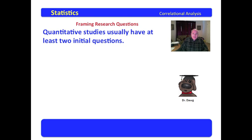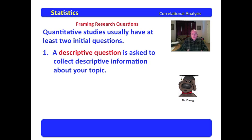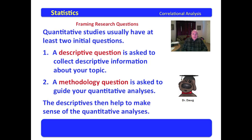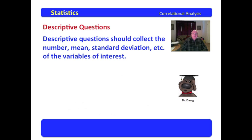Quantitative studies usually have at least two initial questions. The first of these is the descriptive question, which is asked to collect descriptive information about your topic. The second is the methodology question, which is asked to guide your quantitative analysis. The descriptives are very important to have up front because they help make sense out of the quantitative analyses. Descriptive questions should collect the number, the mean, the standard deviation, the maximum, minimum, and the range of the variables of interest.